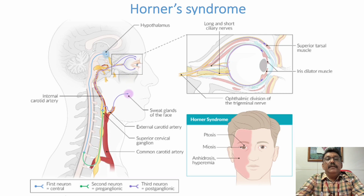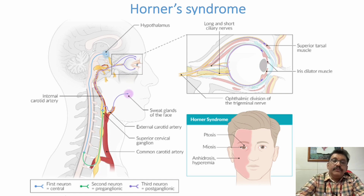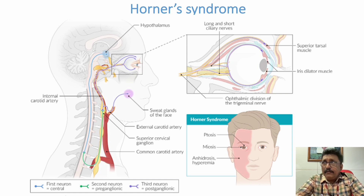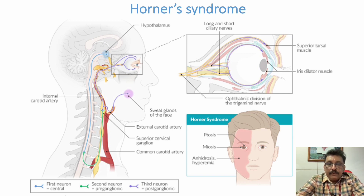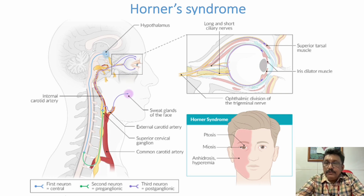You can see here Horner's syndrome: partial ptosis, small pupil, anhidrosis, and hyperemia. These are important features of Horner's syndrome. In comparison, third nerve palsy has similar findings but with complete ptosis. In Horner's syndrome, ptosis is only partial, and there is no ophthalmoplegia — eye movements are not reduced — whereas in third nerve palsy, eye movements are impaired.